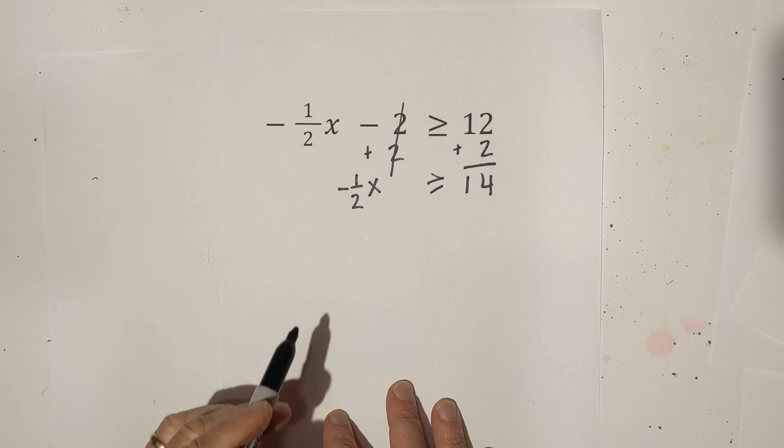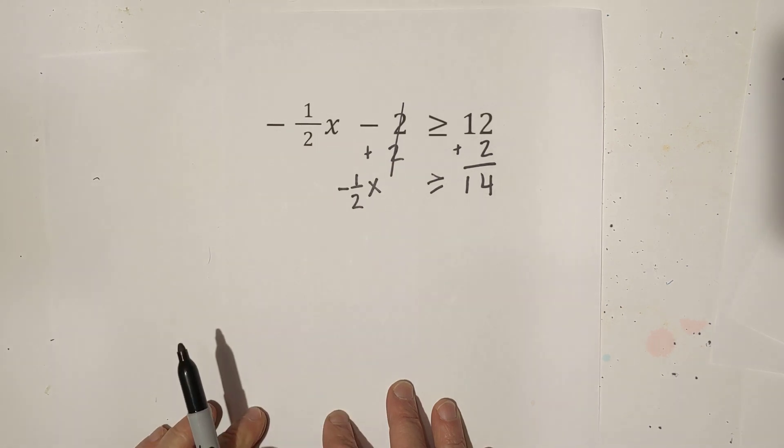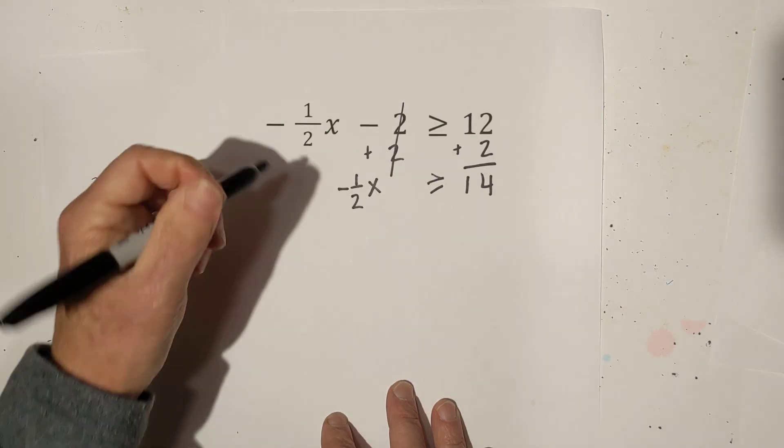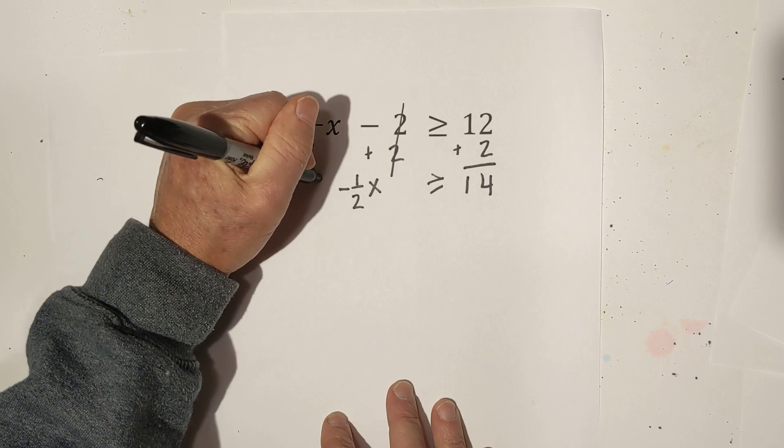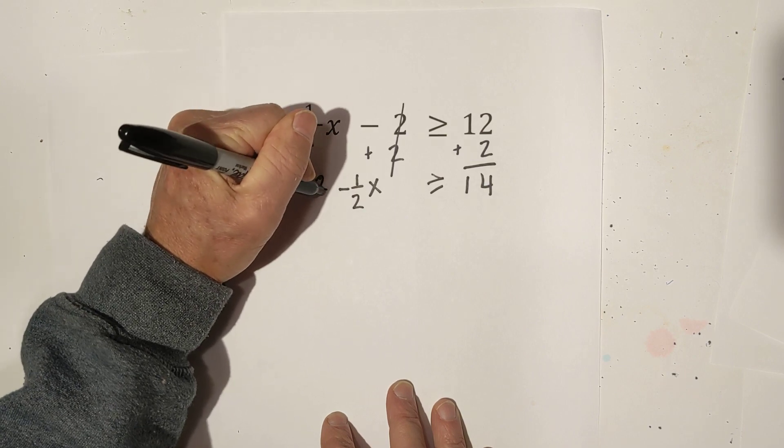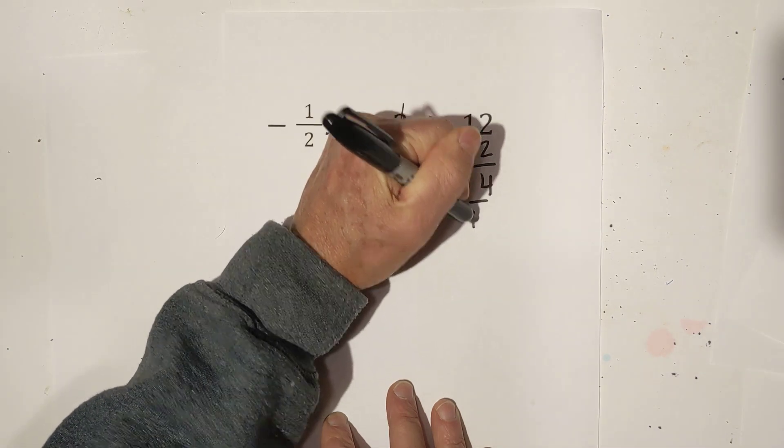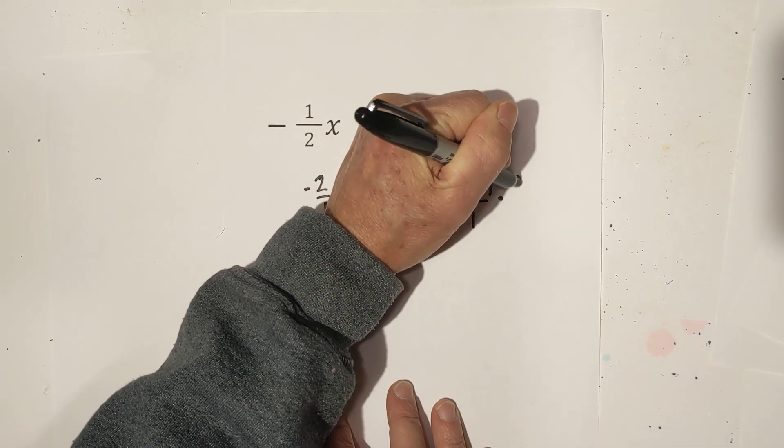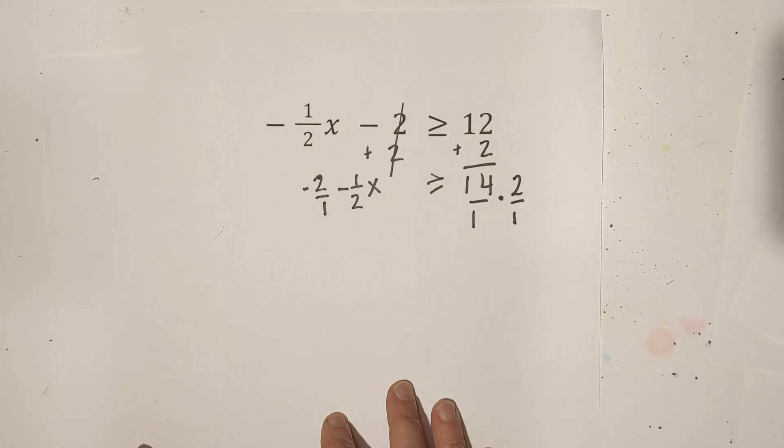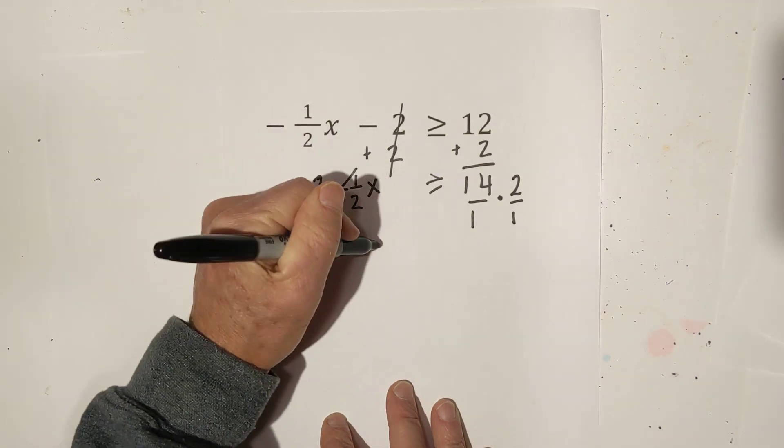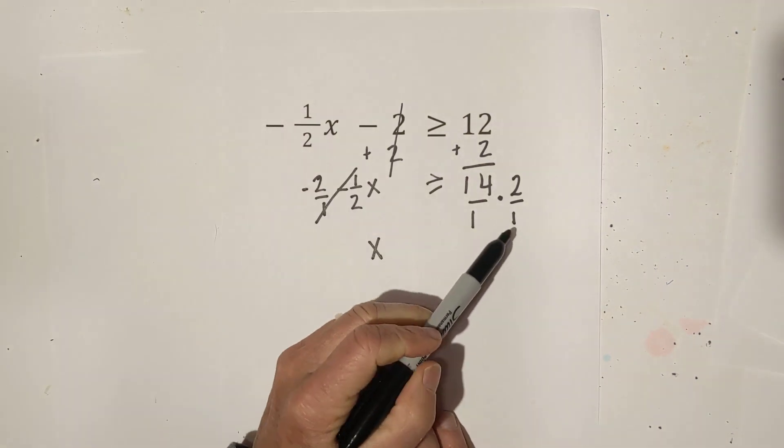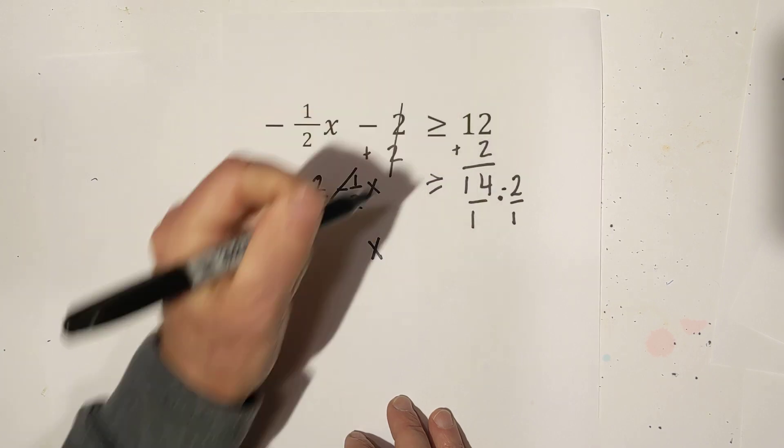So we want to get x by itself. So what we can do is we can multiply it by its reciprocal which is a negative 2 over 1. Let's put 14 over 1 and multiply it by its reciprocal 2 over 1. These cancel. So you have x. Remember this is a negative.